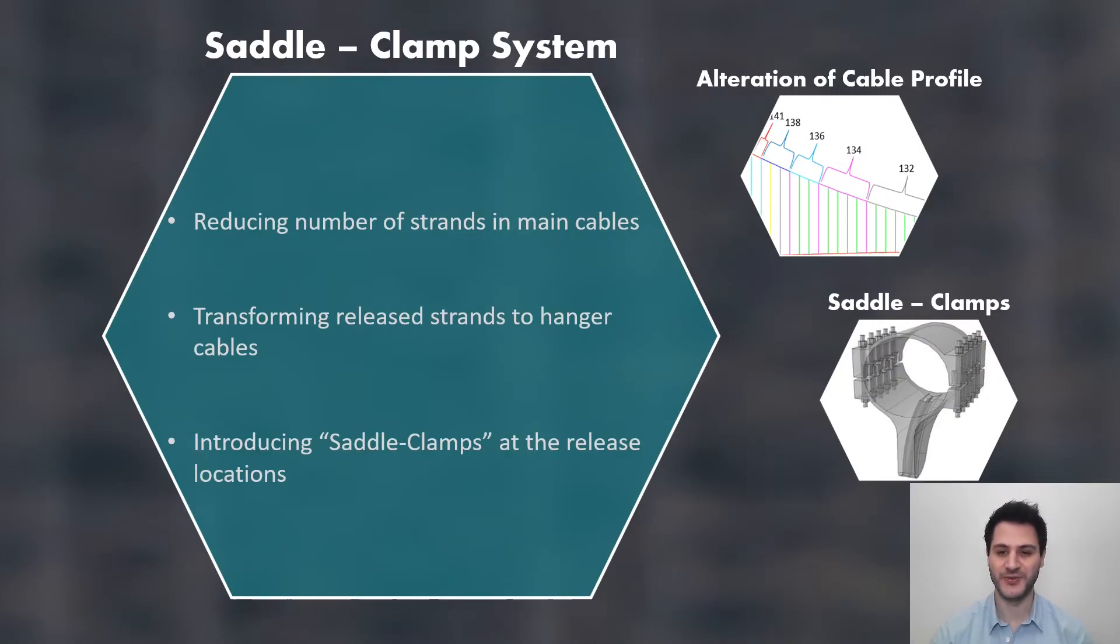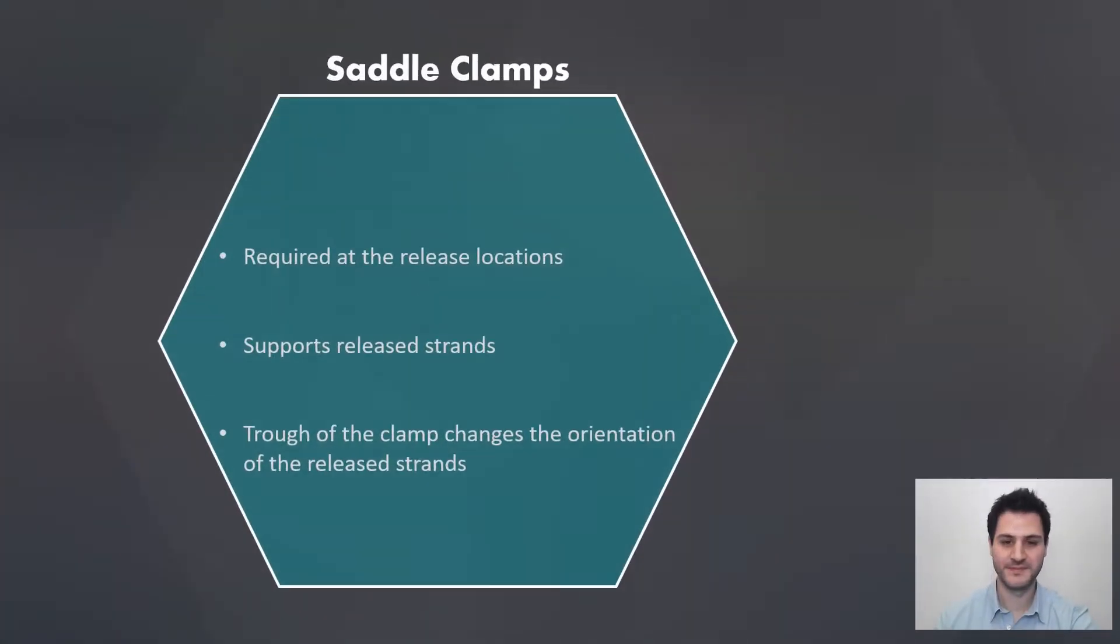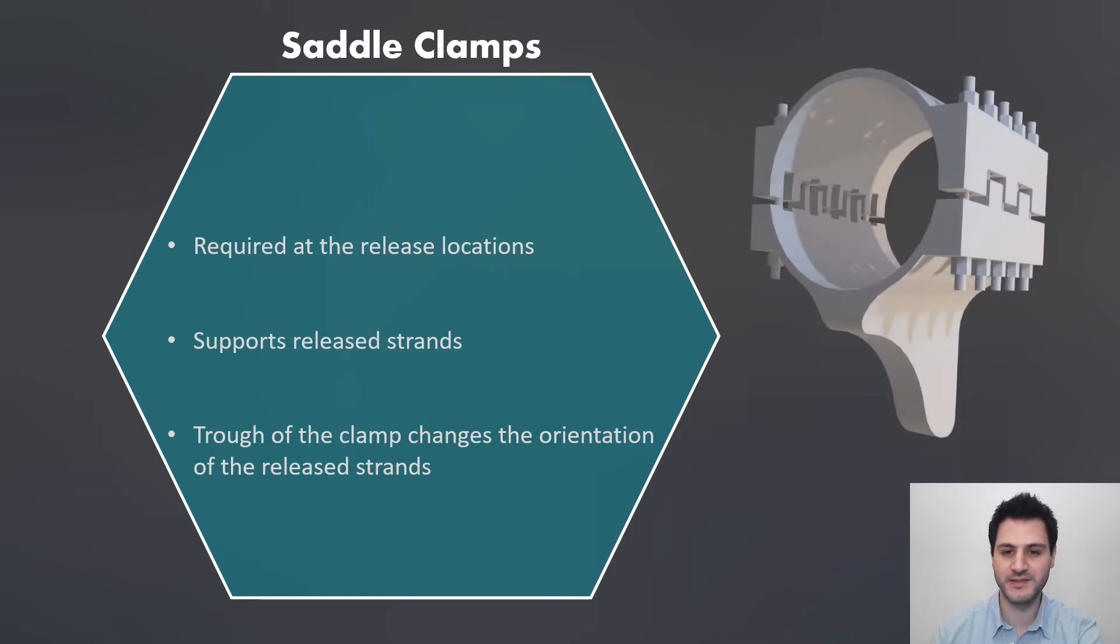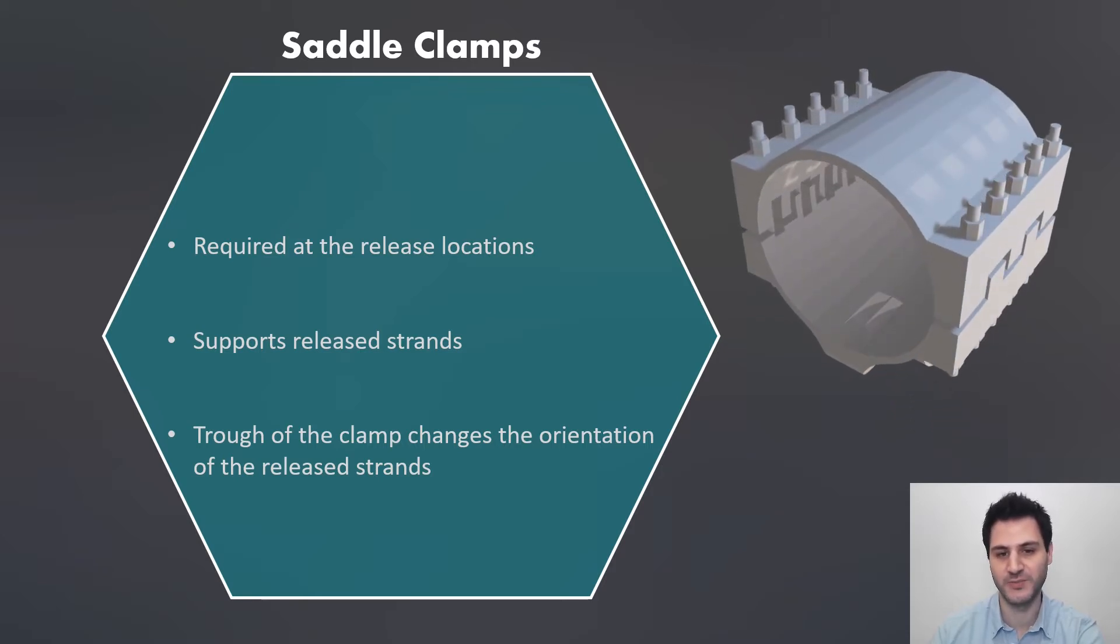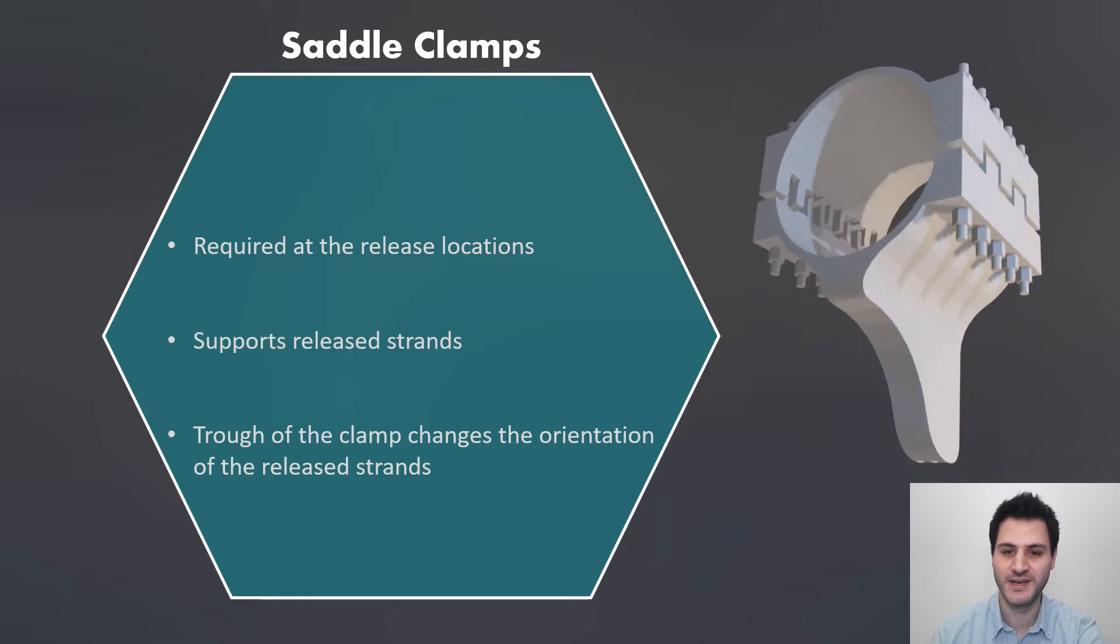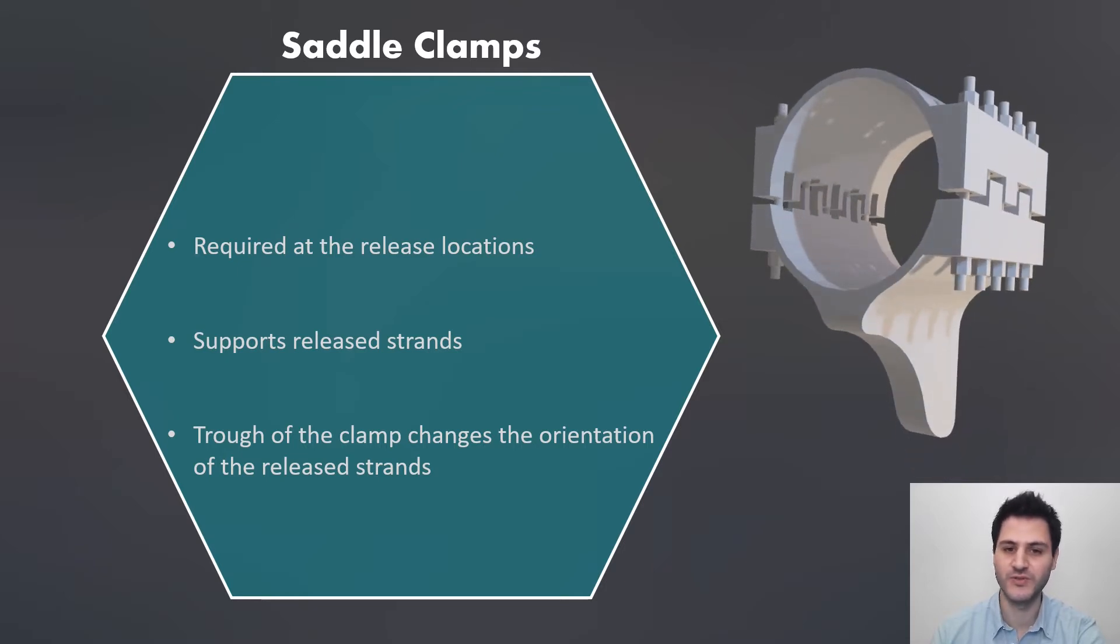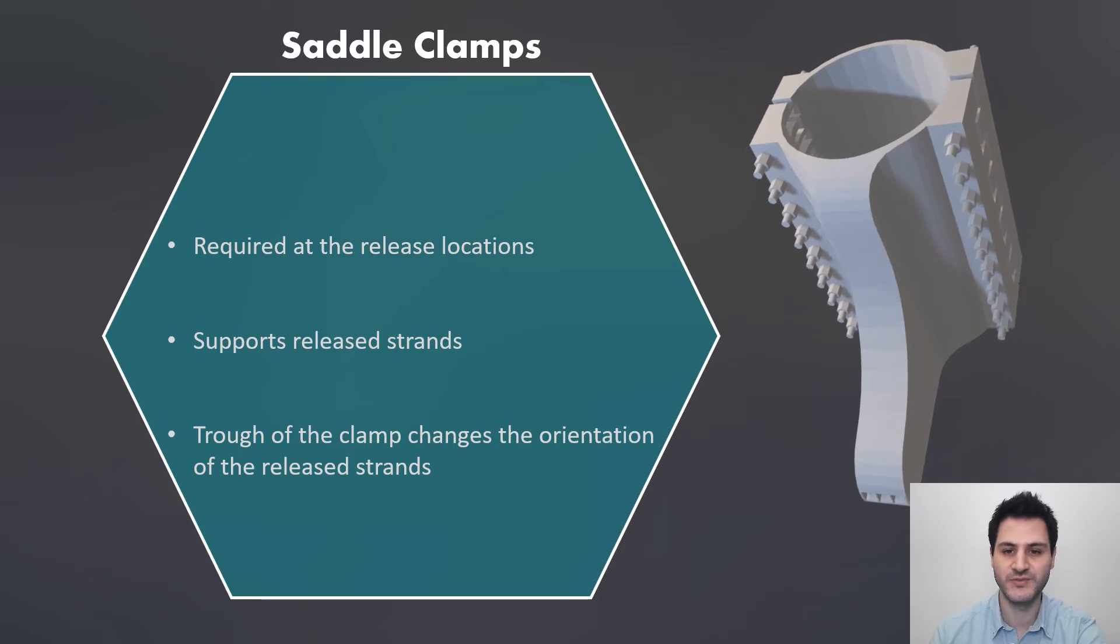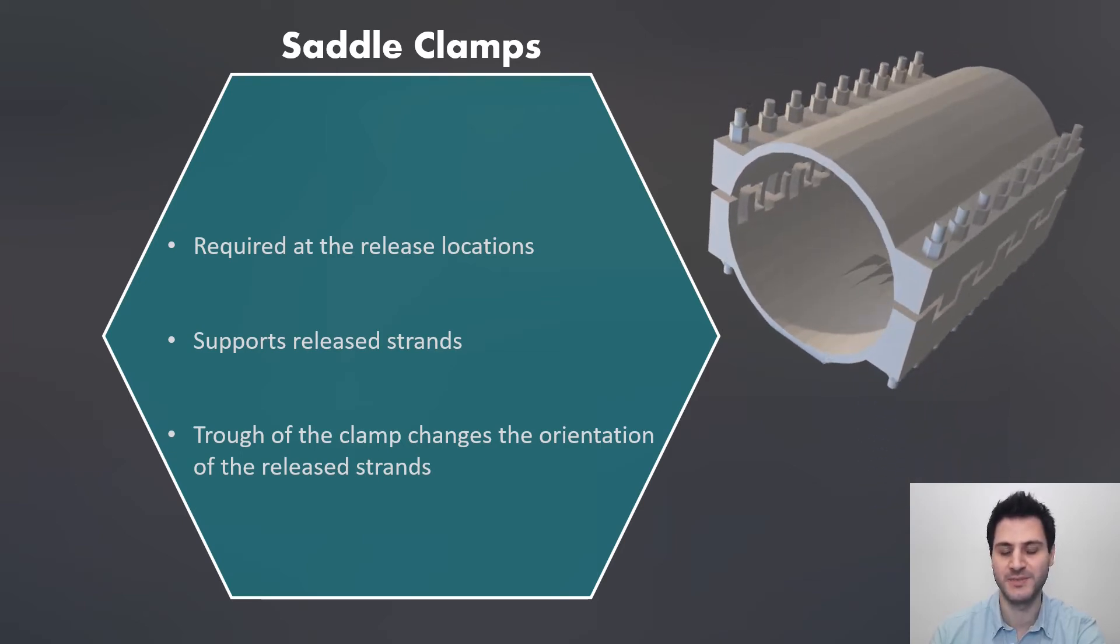Special saddle clamps are required for the alteration of cable profile. Let's examine saddle clamps in more depth. Saddle clamps are the key equipment for the system. They should be placed wherever strands are released. Unlike typical clamp, saddle clamp does not require socket or pin at the top part of the hangers. Instead, there is a trough at the bottom side of the clamp to support release strands and change their orientation. This is a type of saddle clamp which allows to release two strands, and this type allows to release three strands from main cable. Strands will be transformed to a hanger cable after they completely left the saddle clamps.